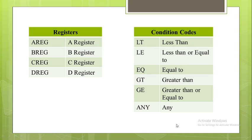We are going to use four registers: A register, B register, C register, and D register, and a number of condition codes. The six condition codes are: LT (less than), LE (less than or equal to), EQ (equal to), GT (greater than), GE (greater than or equal to), and ANY.